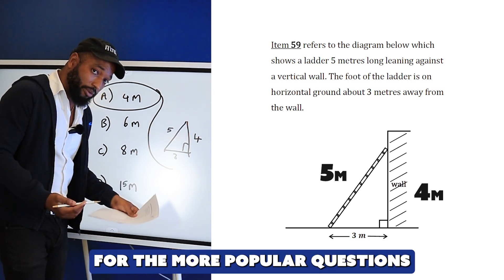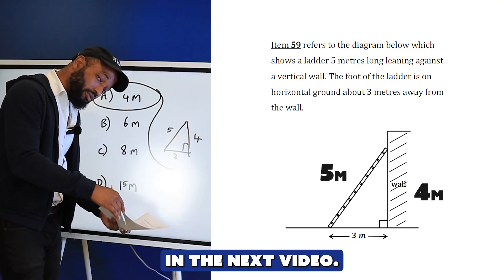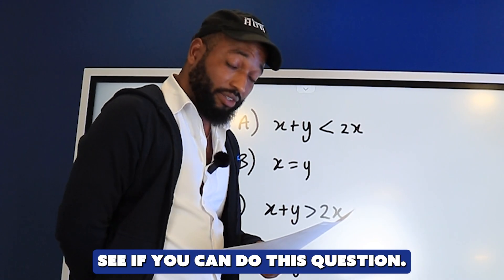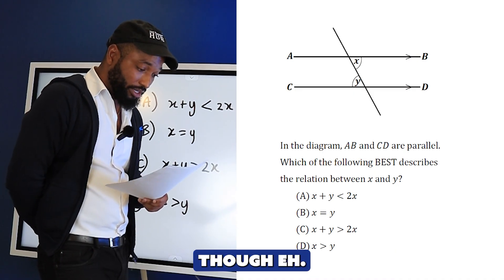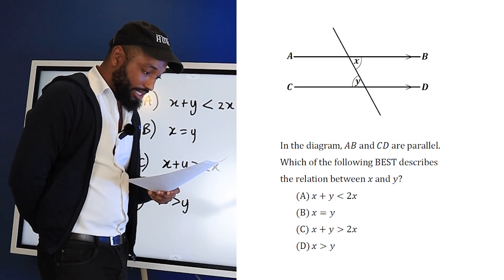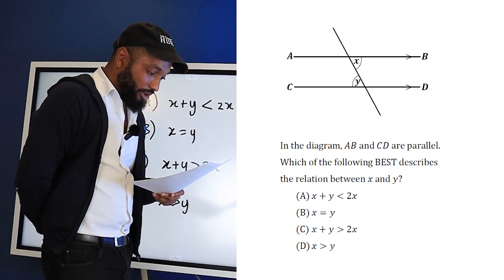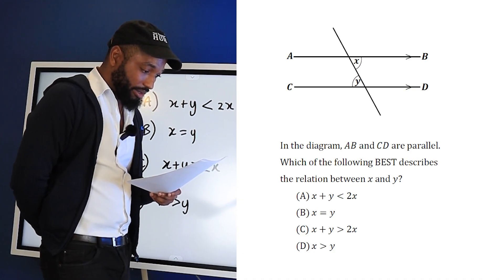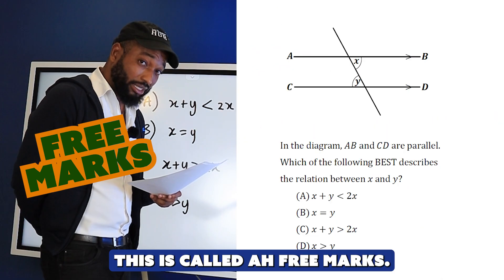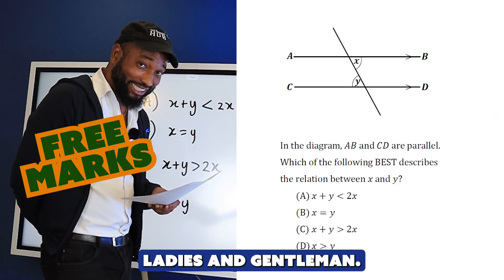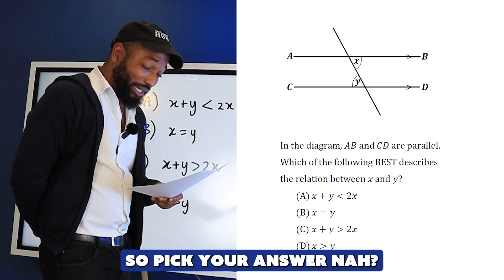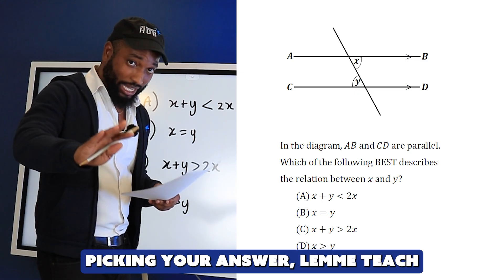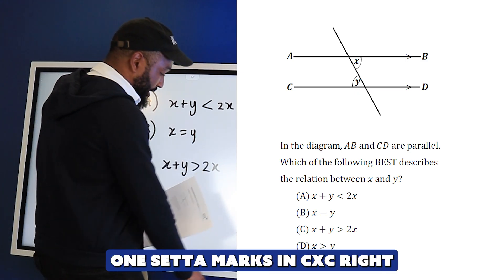See if you can do this question - it's a very popular question. AB and CD are parallel. Which of the following best describes the relationship between x and y? This is called a transversal. Pick your answer now. Let me teach you something that will just earn you marks in CXC.